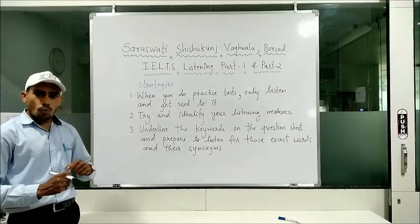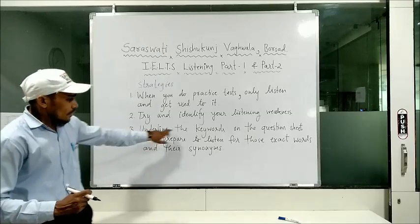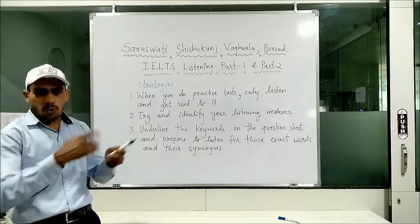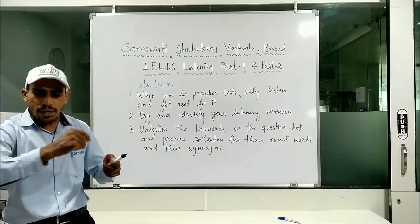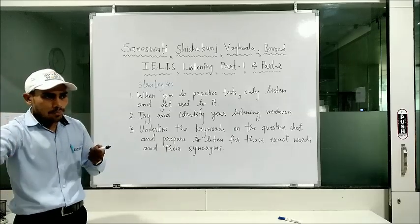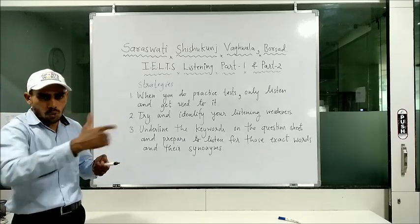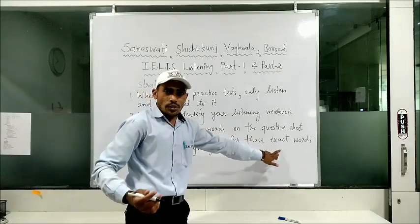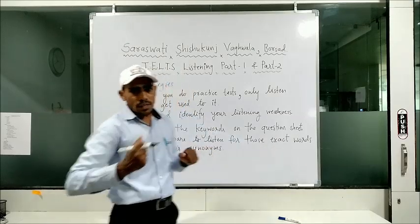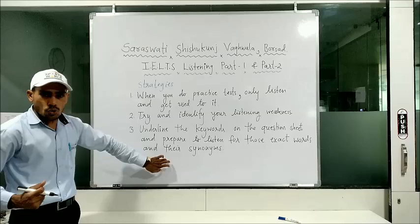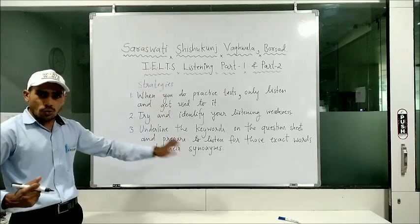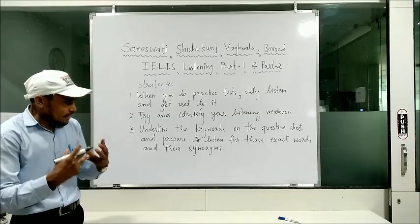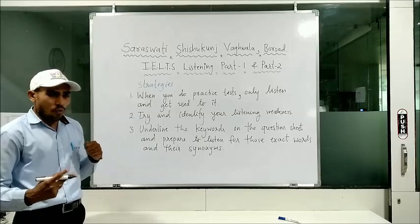The third strategy is: underline the keywords on the question sheet. When you do IELTS Listening, you have a question sheet with you. You need to underline the keywords when you listen to the audio. When you underline the keywords, it will be really easy for you, and you can get the exact words that are being said in the audio. You can also get synonyms as well. So these are the things you need to keep in mind — underline those exact words and find the synonyms.